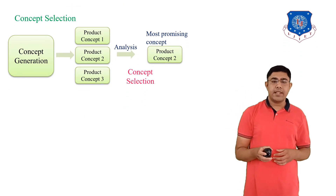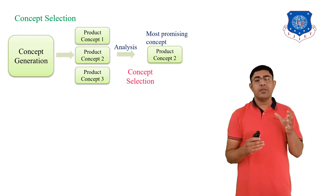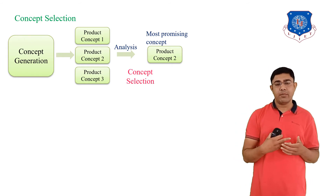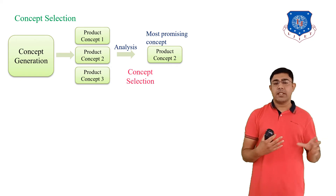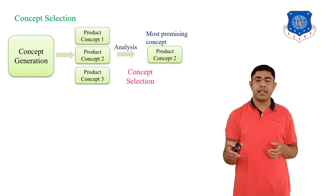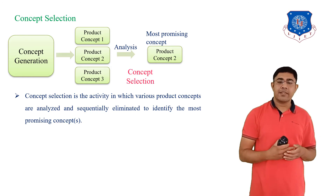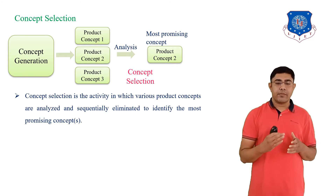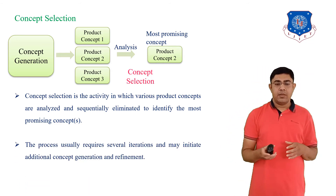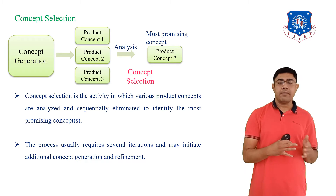Next is concept selection. After concept generation, the next step is concept selection. The output of concept generation — product concept 1, product concept 2, and product concept 3 — must be analyzed to select the most promising concept, which is the concept selection activity. Concept selection is the activity in which various product concepts are analyzed sequentially to identify the most promising concept. The process usually requires several iterations and may initiate additional concept generation and refinements.